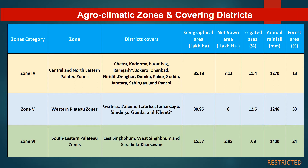The Western Plateau zone covers districts Galwa, Palamu, Latehar, Lohardaga, Simdega, Gumla, and Khunti. The total geographical area is around 30.95 lakh hectares, net sown area is 8 lakh hectares, irrigated area percent is 12.6%, annual rainfall is around 1246 mm, and forest area contribution is 33%. The Western Plateau zone has the highest forest area of 33% in Jharkhand.